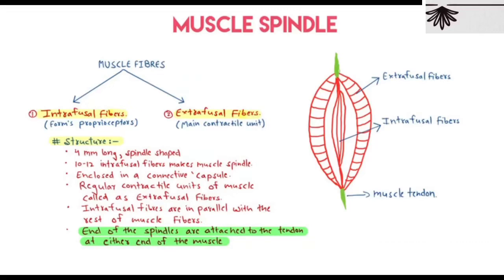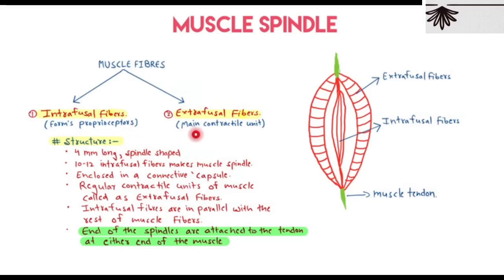In this lesson we are going to study about muscle innervation and reflexes. Starting with the muscle spindle, muscle fibers are mainly two types: intrafusal fibers and extrafusal fibers. Intrafusal fibers form the proprioceptors which send signals to the CNS about the orientation of our body and position of joints through muscles and tendon organs. Extrafusal fibers are mainly contractile elements.